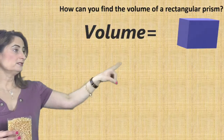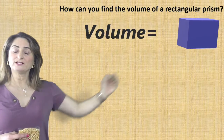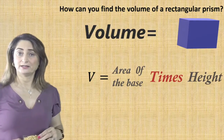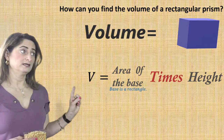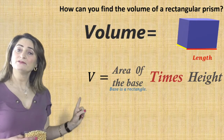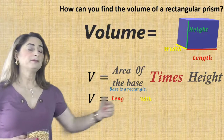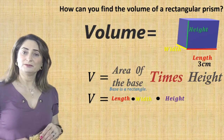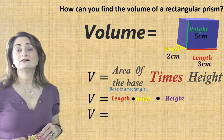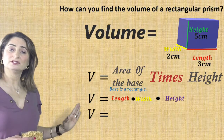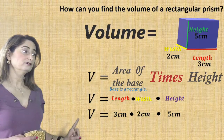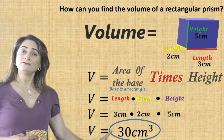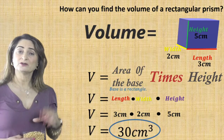Let's try this example. To find the volume of this rectangular prism, first find the area of the base, then multiply it by the height. Since the base is a rectangle, the area of the base is length times width, then multiply by the height to give you the volume. For example, if you have a length of 3 cm, width of 2 cm, and a height of 5 cm, substitute those numbers: 3 times 2 times 5 gives you 30 cm cubed. The label will always be cubed because it's three-dimensional.